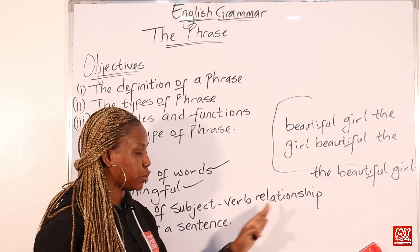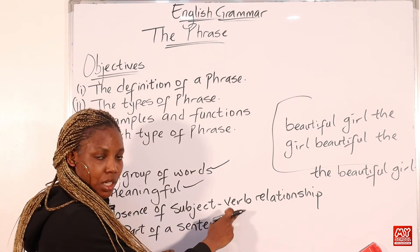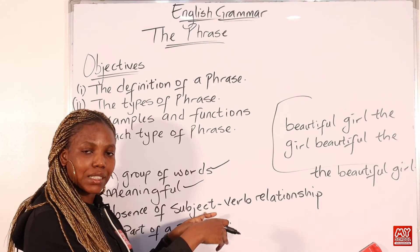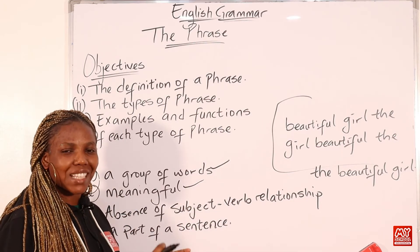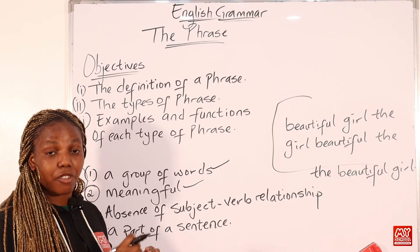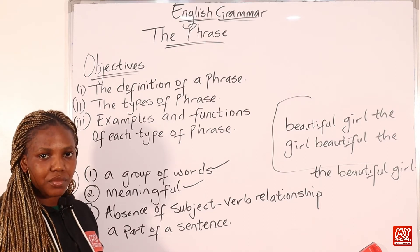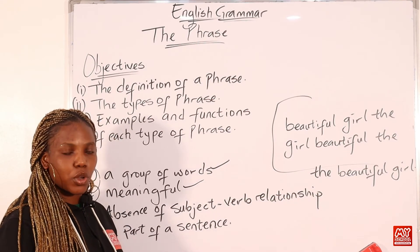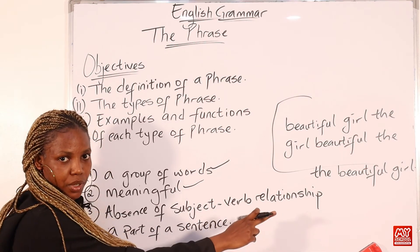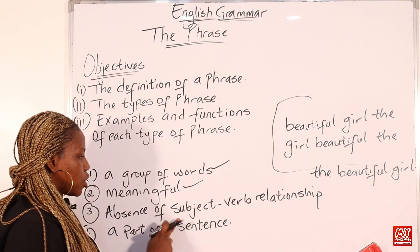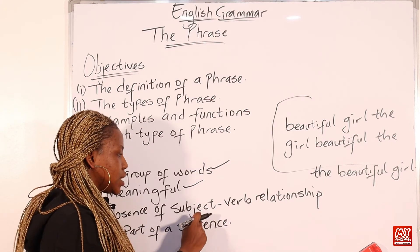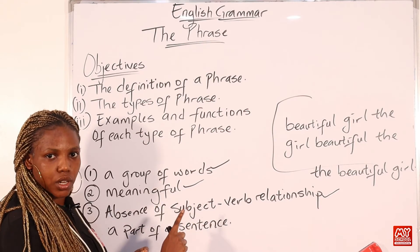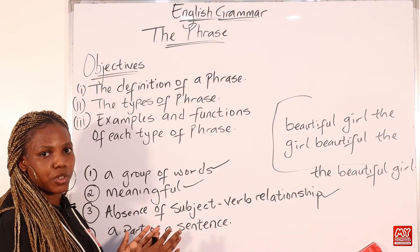Absence of subject-verb relationship — what does this mean? A phrase does not contain both elements: a subject and a verb. It can contain a subject but there will be an absence of the verb, or a verb with an absence of the subject. For example, a verb phrase contains verbs but does not have a subject, while a noun phrase contains the subject but does not have a verb. So a phrase takes one out of the two — either a subject or a verb — and does not share a subject-verb relationship.